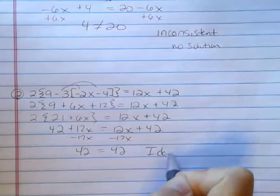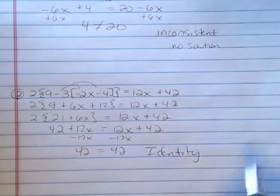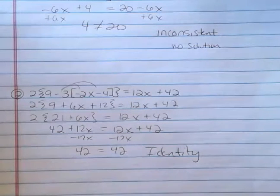I'm going to subtract 12x from both sides, and I'm going to get 42 equals 42. And I, therefore, have an identity, because this is always going to be true no matter what number I plug in. All right. That's it. Have a great day.